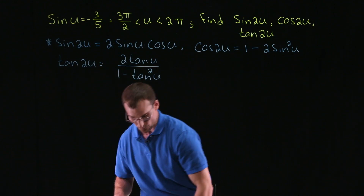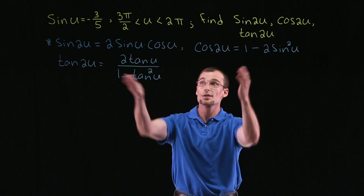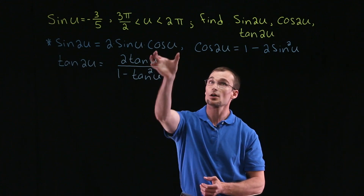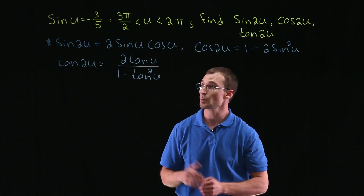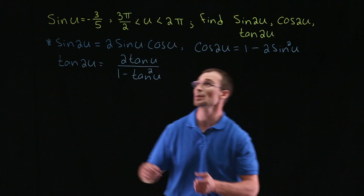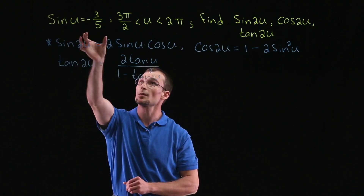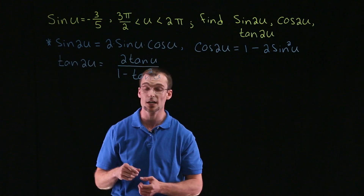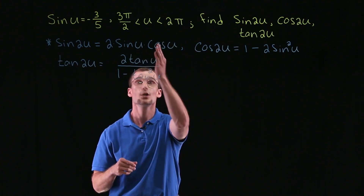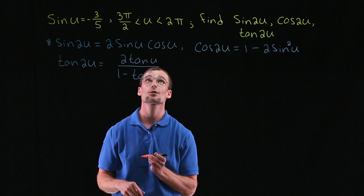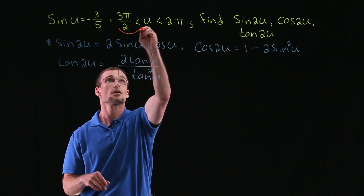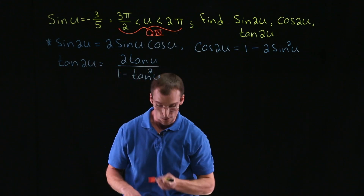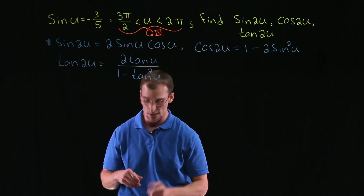Where do we go from here? Looking at all of these formulas, separate from what we're given — which is sine of u — the other things that we need are cosine u and tangent of u. We've done similar problems before: given the sine of some angle and the location of that angle, we found the remaining trig functions. So here, with sine of u equal to negative three-fifths, where u is between three pi over two and two pi — namely, that tells us u is in quadrant four — we can find the remaining functions cosine u and tangent u.